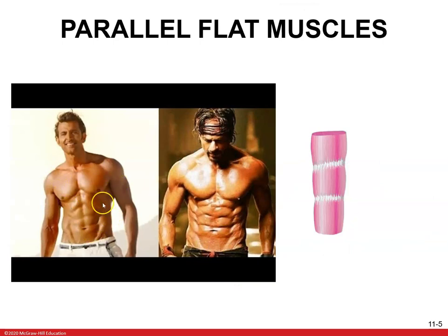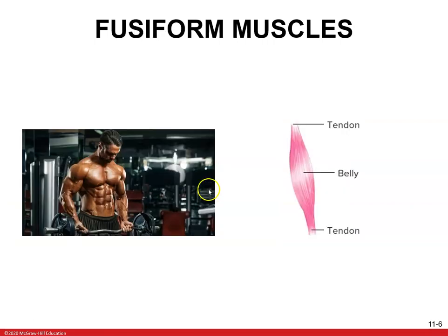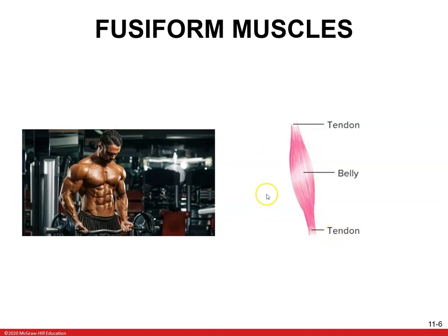Here are parallel muscles — some pretty good flat parallel muscles right here. You've got fusiform muscles, which are your biceps. You can see some good biceps, which has a tendon, a belly, and another tendon right here.